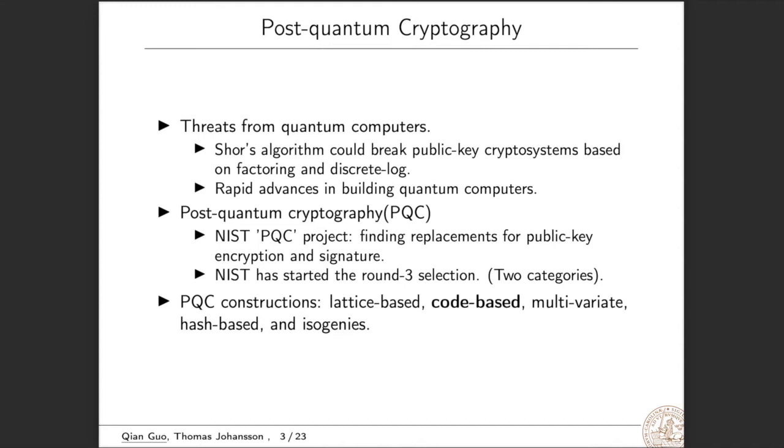Generally speaking, post-quantum cryptography constructions can be categorized into several branches: lattice-based, code-based, multivariate-based, hash-based, and isogeny-based. Until recently, lattice-based crypto seems to be the most promising branch and code-based crypto is the second most popular one.